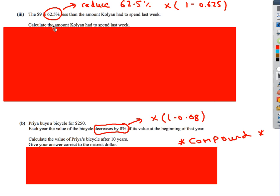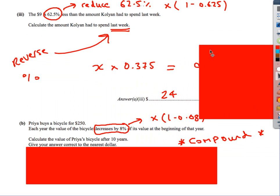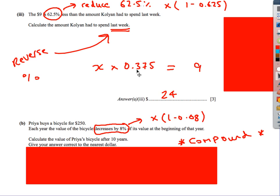Next one. Now we get on to the percentage questions. The $9 is 62.5% less than she spent last week. As soon as you see last week, you should be thinking reverse percentage. We'll keep that in mind. Reduce by 62.5%. We start with 100%, take away 62.5%. And in effect, therefore, we end up with 37.5%.